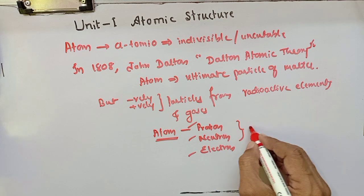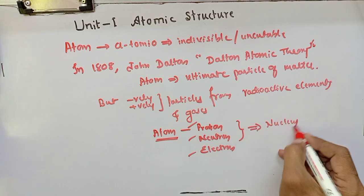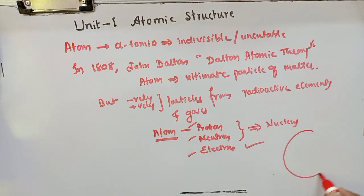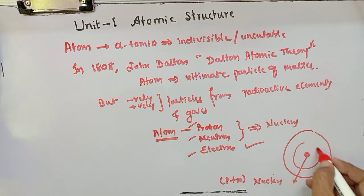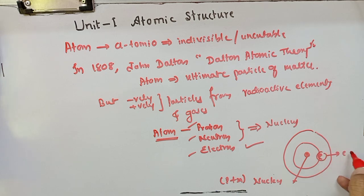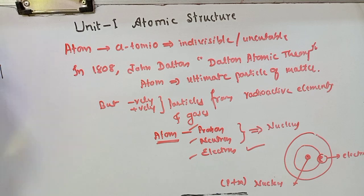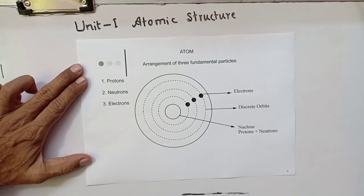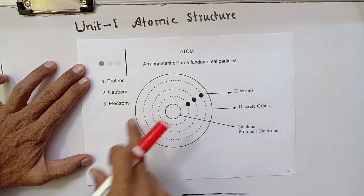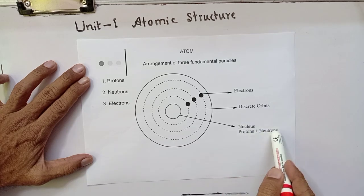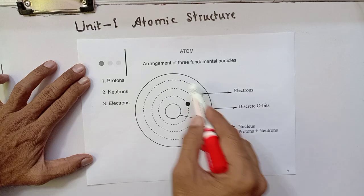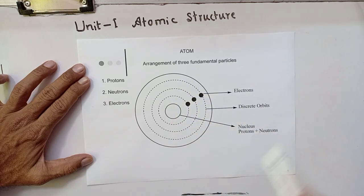It is fully established that atom consists of three fundamental particles: protons, neutrons and electrons. Protons and neutrons are present in the nucleus, and electrons are revolving around the nucleus as shown in this figure. The discrete orbits are proposed by Bohr's model.